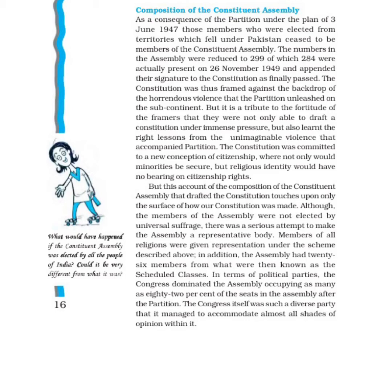As a consequence of the partition under the plan of 3 June 1947, those members who were elected from territories which fell under Pakistan ceased to be members of the constituent assembly. The number of members in the assembly was reduced to 299, and the constitution was adopted on 26 November 1949. 284 members were actually present on 24 January 1950 and appended their signature to the constitution as finally passed, and the constitution came into force on 26 January 1950.